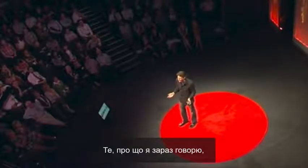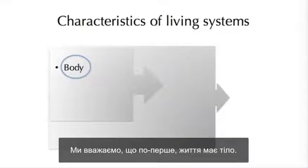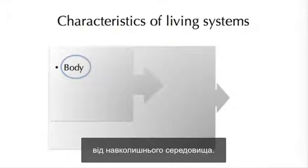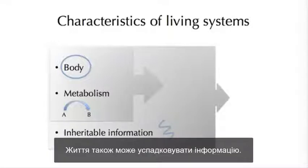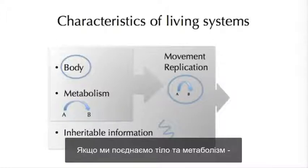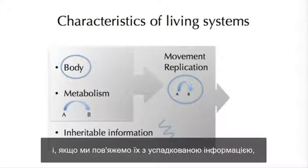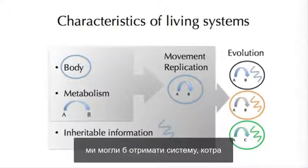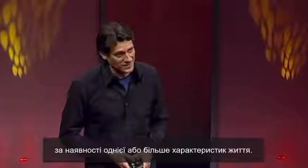So what are these characteristics? First, life has a body — necessary to distinguish the self from the environment. Life also has a metabolism, a process by which it can convert resources from the environment into building blocks to maintain and build itself. Life also has inheritable information; we as humans store our information as DNA in our genomes and pass it to our offspring. Coupling body and metabolism gives a system that could move and replicate. Coupling those with inheritable information gives a system that could evolve. These are the things we have tried to do in the lab.